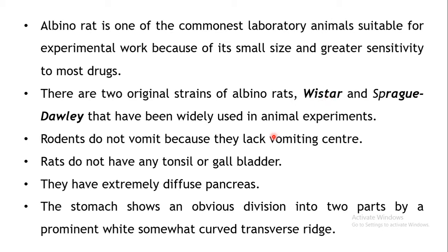The rat belongs to the rodents and does not vomit because it lacks a vomiting center. It also does not have tonsils or a gallbladder. The pancreas of the rat is quite diffuse, making it useful for studies related to the pancreas and diabetes. The stomach is divided into two parts with a prominent ridge.